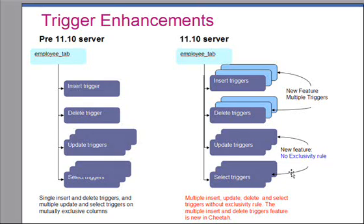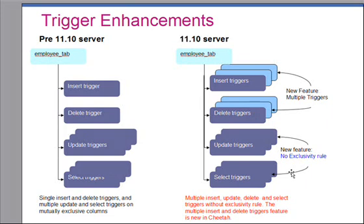Let's talk about the trigger enhancements in IDS version 11. Previously, IDS supported a single insert trigger and a single delete trigger. It supported multiple update triggers, but only one update trigger per table — or if you chose to have multiple update triggers, one update trigger per column, meaning once you created an update trigger for a column, you couldn't create another for that same column. Now with IDS version 11, you can create multiple update triggers on a single column or combination thereof. Similarly, you can now create multiple select triggers as well.